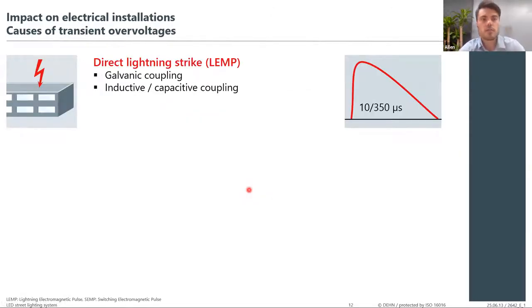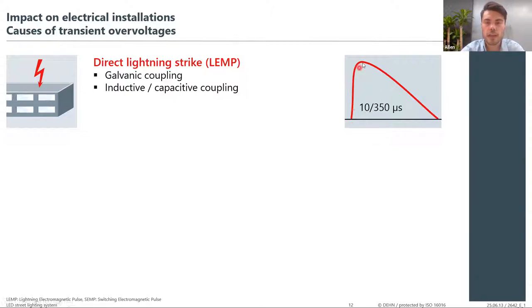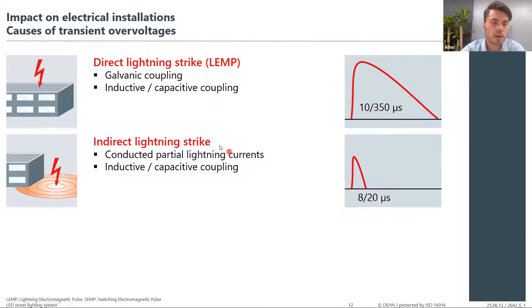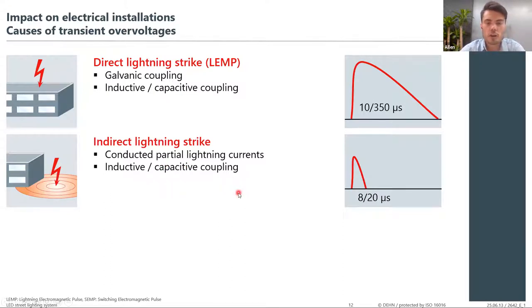The causes of transient overvoltages include a direct lightning strike to a building, associated with a 10/350 waveform — meaning it takes 10 microseconds for the lightning current to reach peak value and 350 microseconds to reduce to half its peak value. Transients can also be caused by indirect lightning strikes near your building. Due to the high-frequency behavior of a lightning strike, a changing magnetic field induces currents and voltages onto nearby power or telecommunication lines through inductive and capacitive coupling. Surges are generally defined as an 8/20 waveform — 8 microseconds to reach peak, 20 microseconds to reduce to half the maximum peak current.